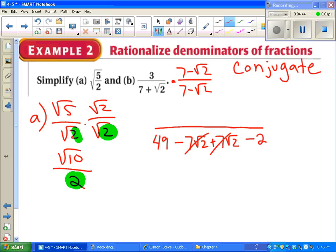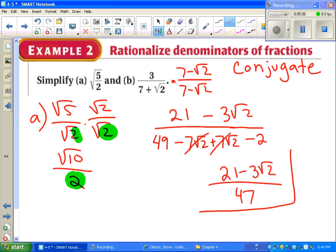The top, we just distribute. 3 times 7 is 21 minus 3 square root of 2. So we end up with 21 minus 3 square root of 2 on the top, 49 minus 2, which is 47 on the bottom. If we were able to reduce this, we would. But nothing goes into 21, 3, and 47. 3 goes into 21 and 3, but 3 doesn't go into 47. So we can't reduce this. We're done. Conjugate is a big idea. We're going to be using it a ton in this chapter. So don't ignore it.